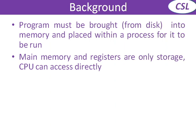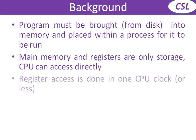Main memory and registers are the only storage CPU can access directly. There are different types of memory available in our computer: main memory, registers, cache memory, and secondary storage memory. Among these, CPU can directly access main memory, registers, and cache memory. It cannot directly access secondary memory. Whenever you want to access data from secondary memory, through main memory only can the CPU get the data. Register access is done in one CPU clock cycle.